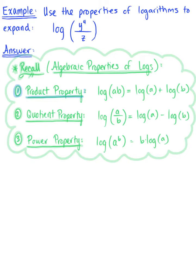Our second property is the quotient property of logarithms, which says if we have log of a divided by b, that this is equal to log of a minus log of b.